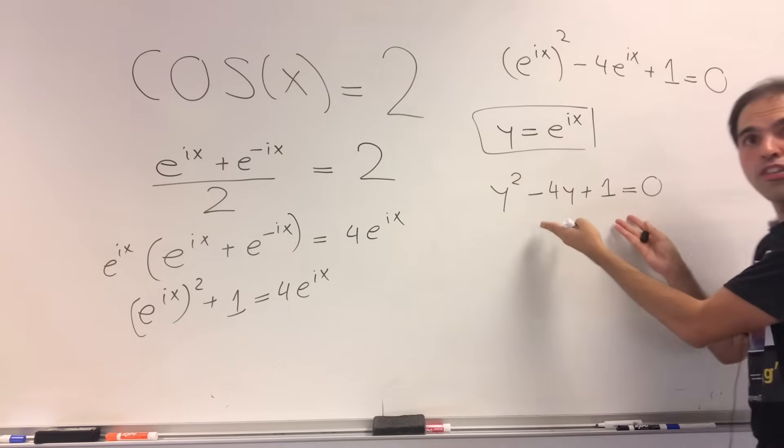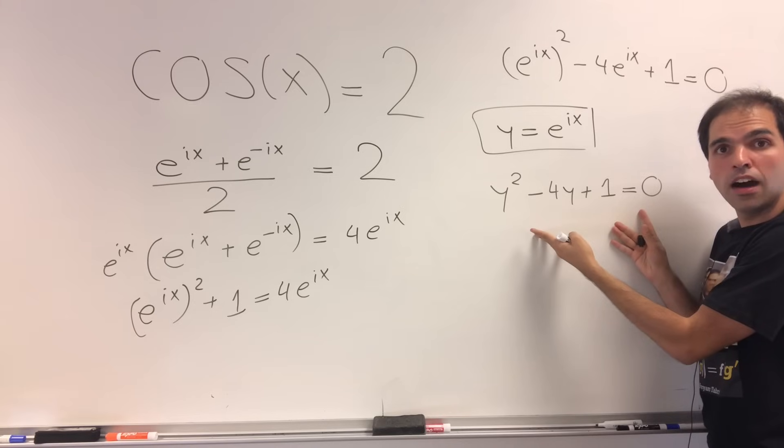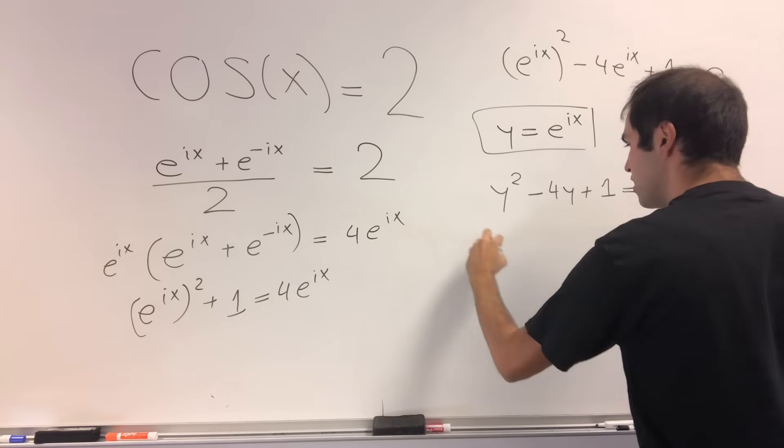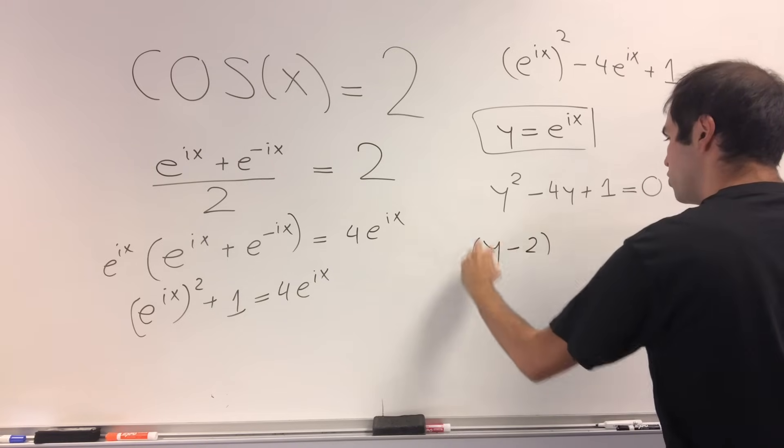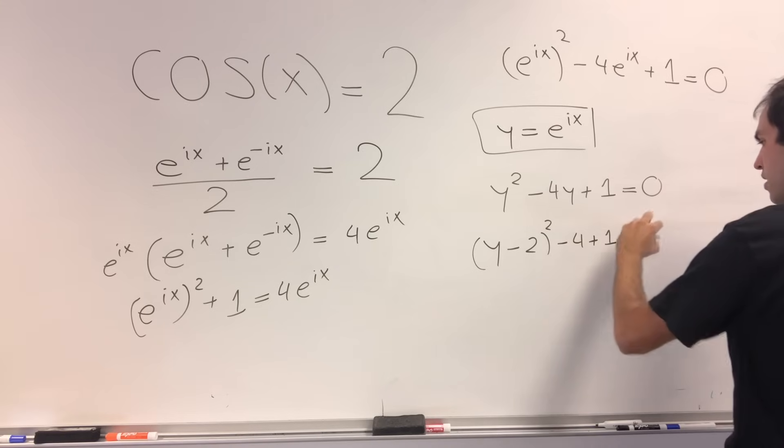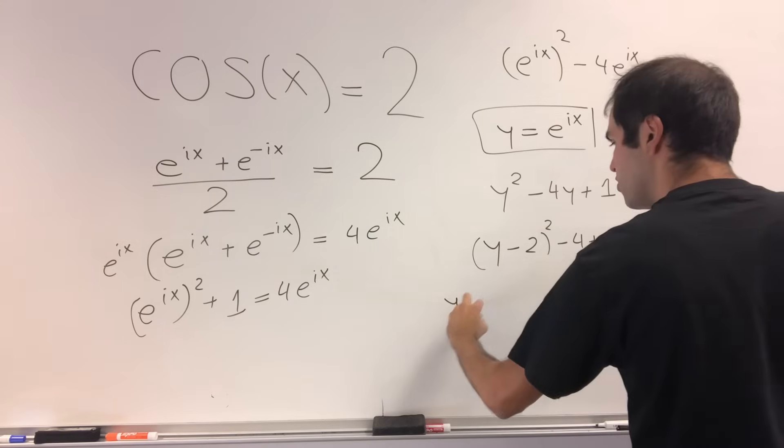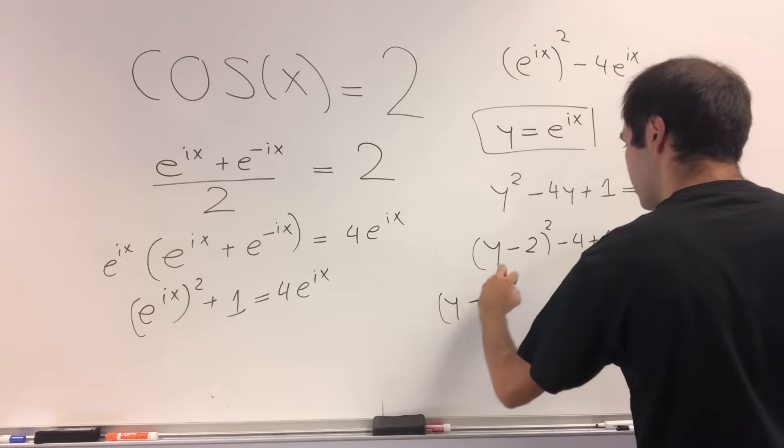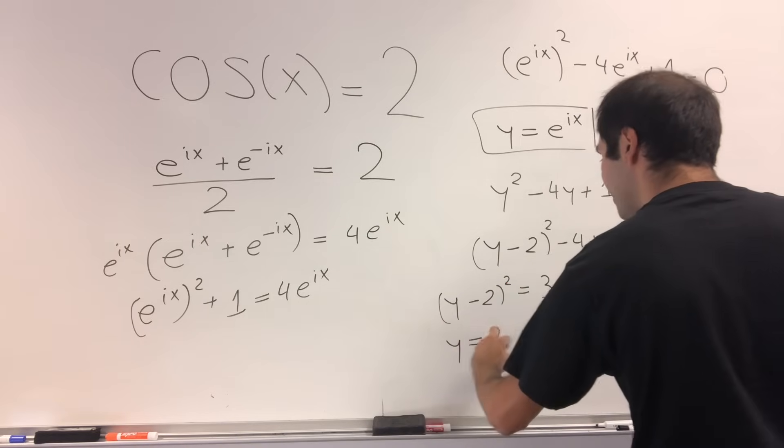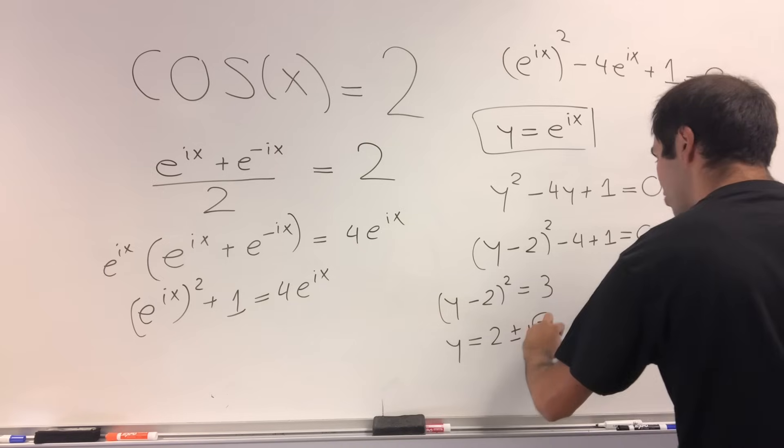However, you can now either use the quadratic formula or simply, more easily, just complete the square because this is y minus 2 squared minus 4 plus 1 equals 0. So y minus 2 squared equals 3, so essentially y is 2 plus or minus square root of 3.